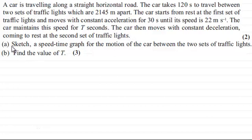Part a asks us to sketch a speed-time graph for the motion of the car between the two sets of traffic lights for two marks, and then part b asks us to find the value of t for three marks.